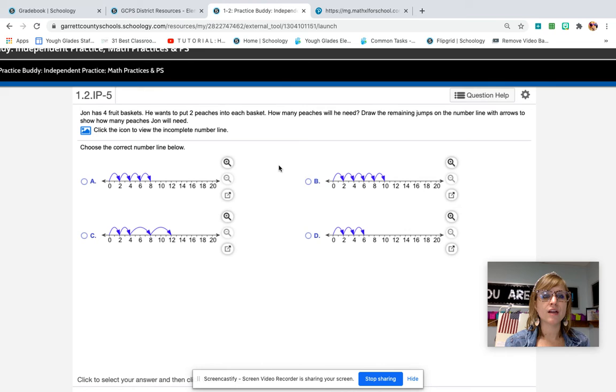So John has four fruit baskets. We know that we need to find a number line that shows four fruit baskets. And we need to find the number line that shows two in each basket.